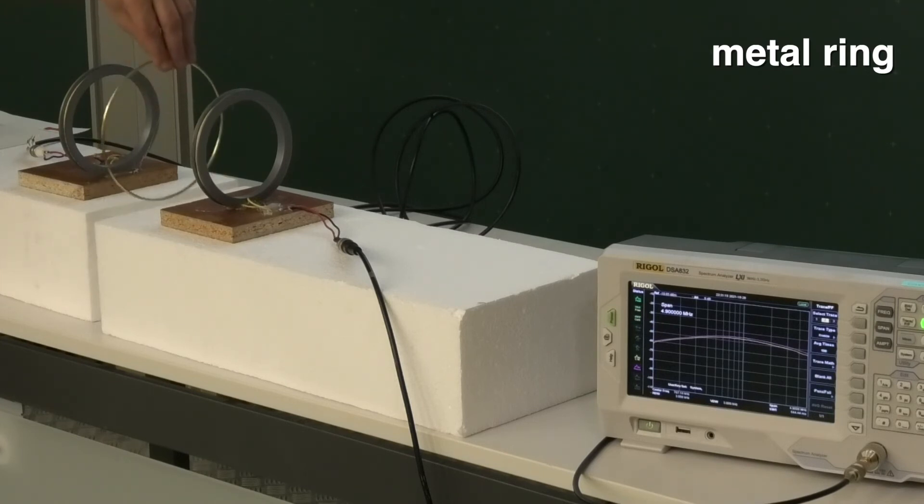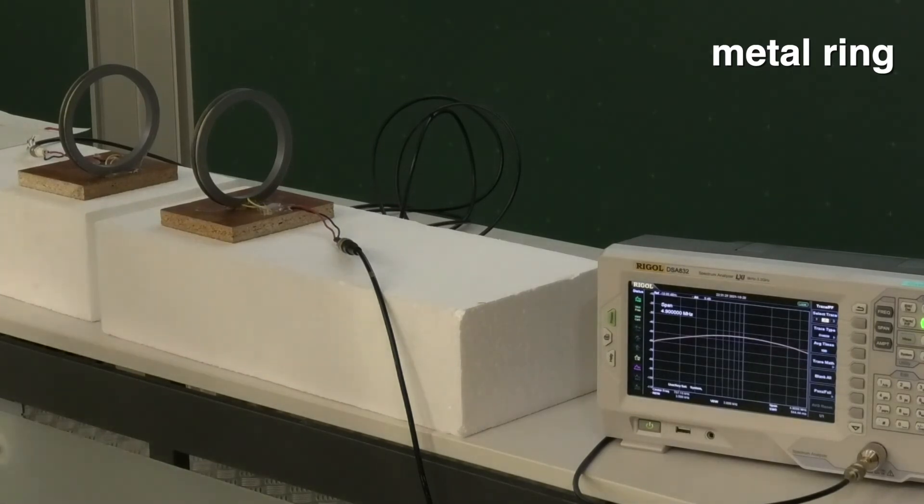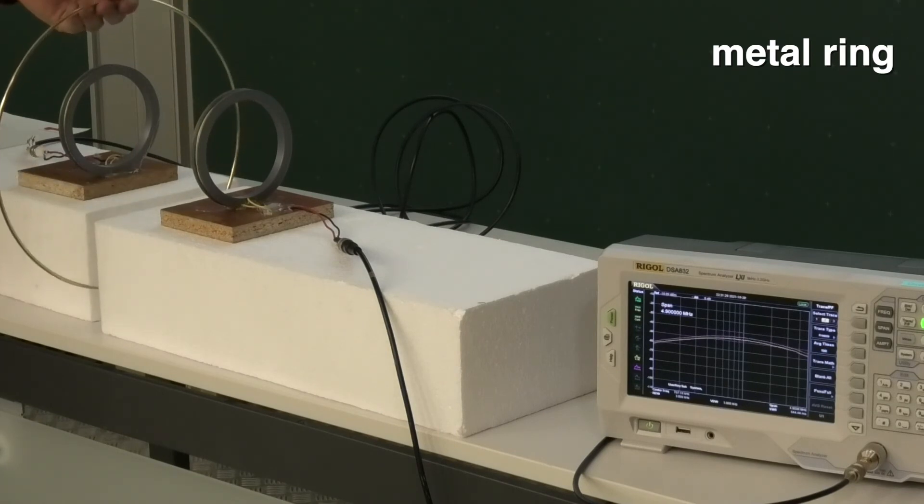But to some extent it reduces because there's a current. A big ring. And of course, it should have the same. I don't know if it's stronger or weaker. You can, of course, have two rings.